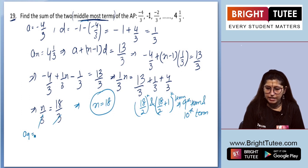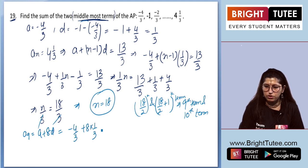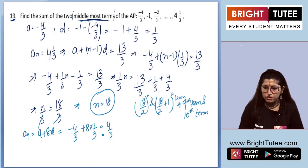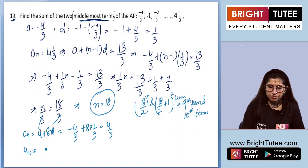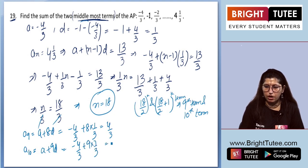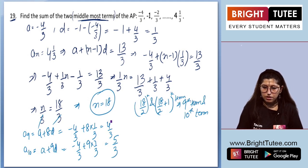They have said that 9th term and 10th term are the final answers which you have. So to find the 9th term, we will be finding 9th term first. What will that be? A plus 8D. Now A is minus 4 by 3 plus 8D is 1 by 3. So solving it, we will be getting 4 by 3. Because 8 minus 4 is 4, so that will be 4 by 3. How about 10th term? That will be A plus 9D, which is minus 4 by 3 plus 9 times 1 by 3. Now 9 minus 4 is 5, 5 by 3. So A9 is 4 by 3, A10 is 5 by 3.